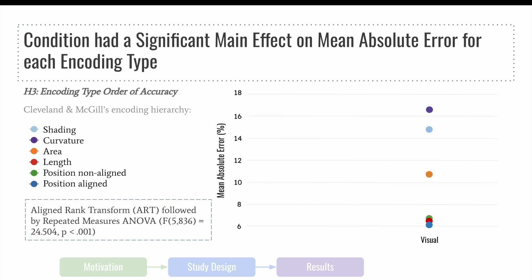In the visual condition, our order slightly differed from Cleveland and McGill's. In our data, we found that curvature and shading flipped positions with curvature showing the highest error rate. Similarly, length and position non-aligned flipped positions, although the differences were marginal.